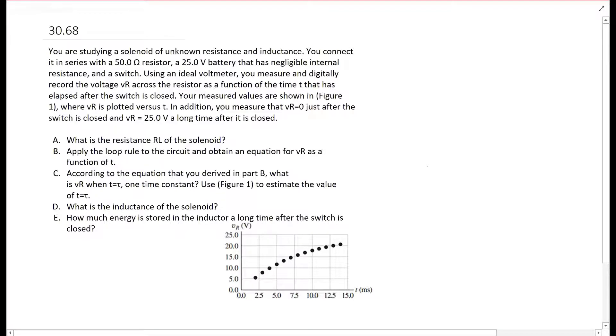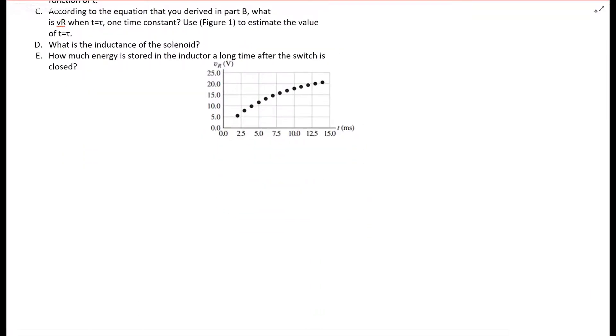So because it went all the way back up to 25, the resistance in the solenoid is zero, because if the solenoid had resistance, that resistor would not be able to get the 25 volts again. It just wouldn't be possible.